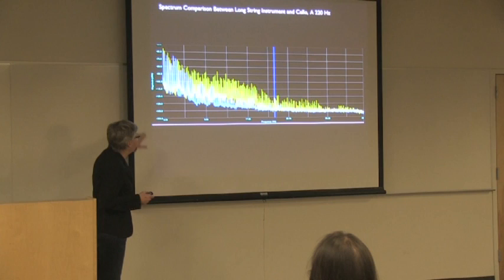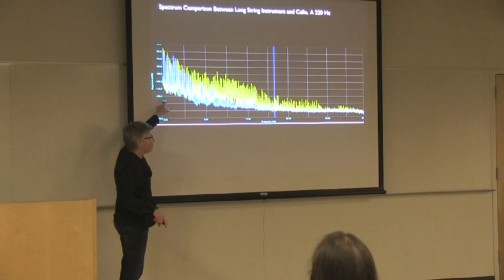This slide shows a comparison of my instrument with the cello. My instrument is the yellow and the cello is blue. We're both playing A, concert A, 440. The cello and long string instrument in the lower frequency range, at the fundamental level, are nearly matched.